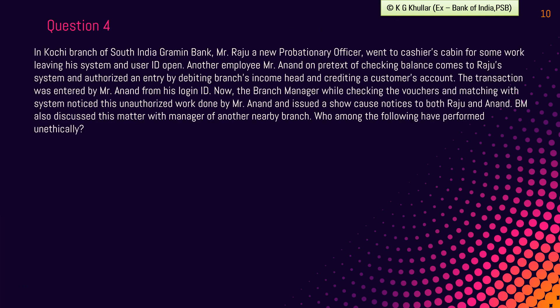Next question is also a case study. In the Kochi branch of South India Grameen Bank, Mr. Raju, a new probationary officer, went to the cashier's cabin for some work leaving his system and user ID open. Another employee, Mr. Anand, on the pretext of checking balance, comes to Raju's system and authorized an entry by debiting branch income head and crediting a customer's account. The transaction was entered by Mr. Anand from his login ID. The branch manager, while checking vouchers and matching the system, noticed this unauthorized work done by Mr. Anand and issued show cause notices to both Raju and Anand. The BM also discussed this matter with the manager of another branch.